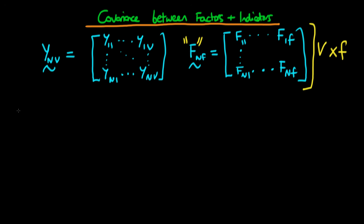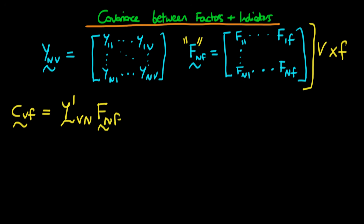So how might we get that? If we want something which is v by f in terms of dimensions, we could take the indicator score matrix, take its transpose to get something v by n, and then multiply that by the factor score matrix. The inner n's cancel and we get something v by f. Just like before for the variance-covariance matrix of the indicator scores, we multiply through by the inverse of the sample size, n to the power minus 1.